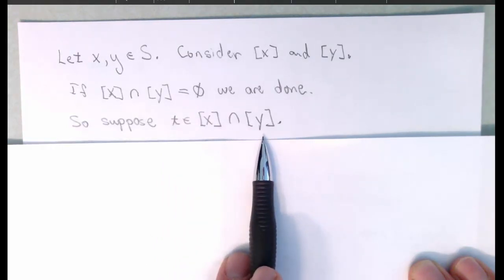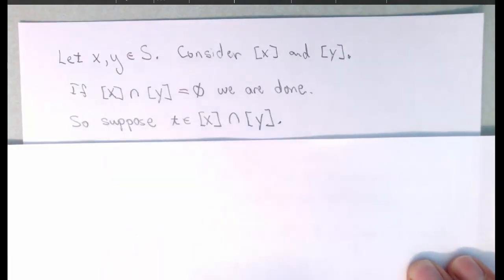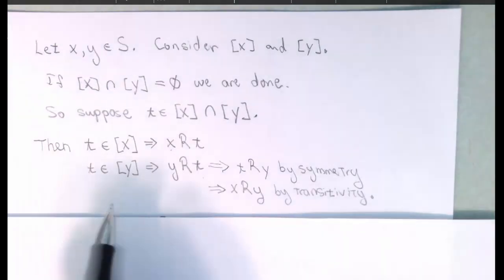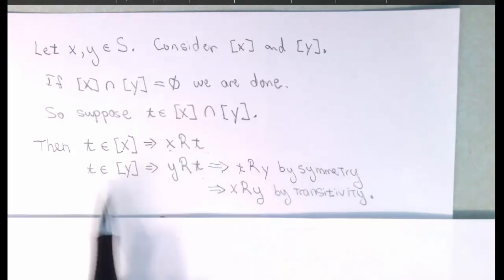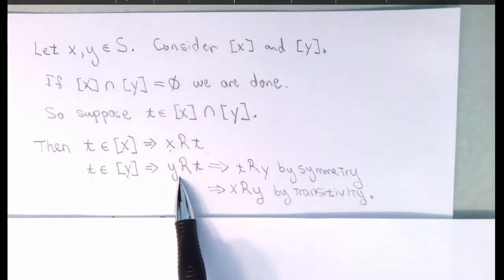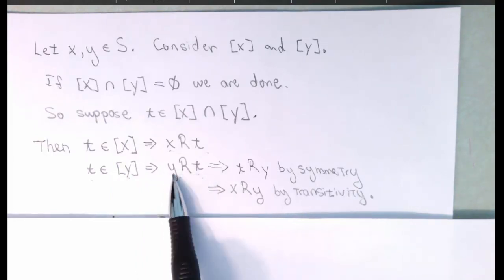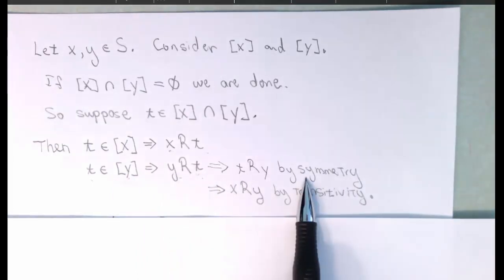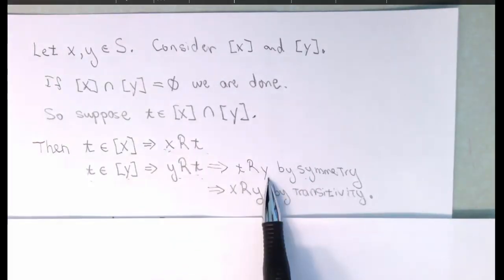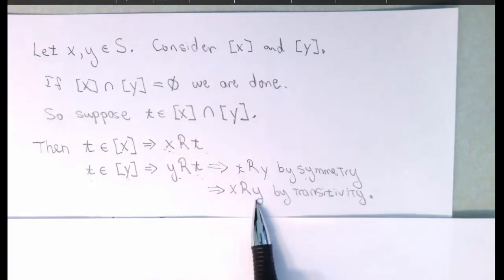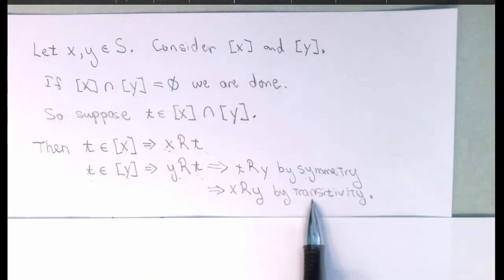Our goal, then, will be to show that the equivalence class of X and the equivalence class of Y are, in fact, equal. So let T be in the equivalence class of X. It must be the case, then, by definition, that X is related to T. And if T is in Y, then it must be the case that Y is related to T. We can turn this relationship around by symmetry, and then X is related to T, and T is related to Y, so that X is related to Y by transitivity.